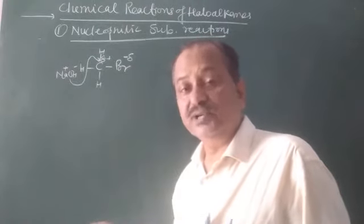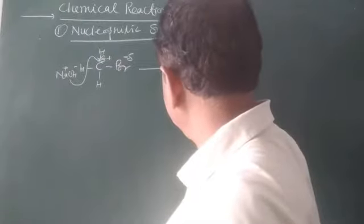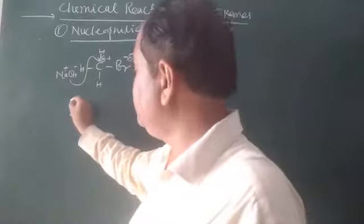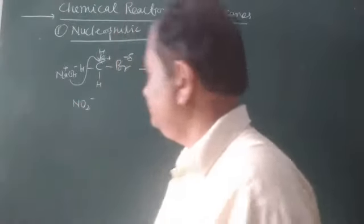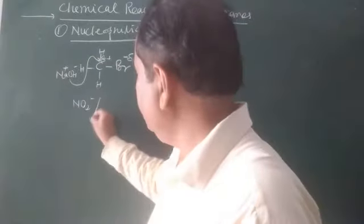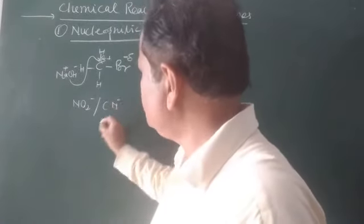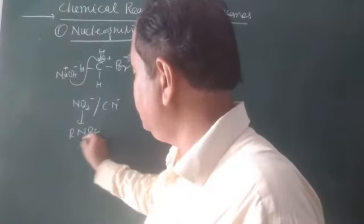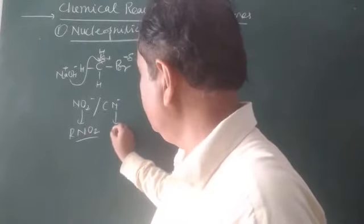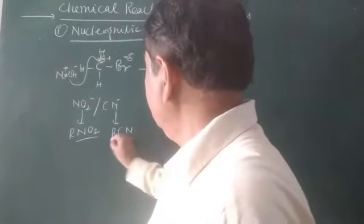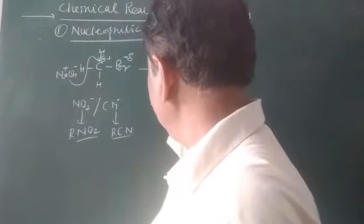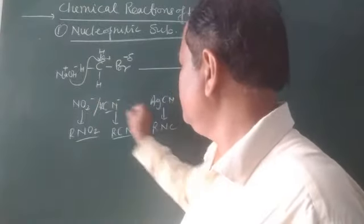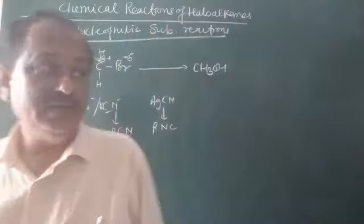The nucleophile can be KOH, nitrite, cyanide, or isocyanide. With NO2⁻, R-NO2 (alkyl nitrite) is formed. With CN⁻ (KCN), R-CN is formed. If AgCN is taken instead, R-NC (isocyanide) is formed.